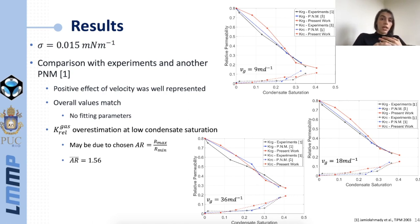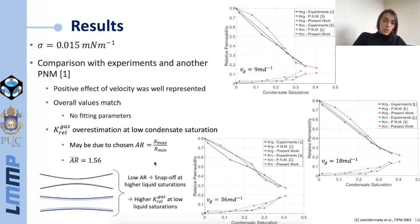For instance, for this other pore network model this average was above three. What happens when you have low aspect ratios is that you snap off at higher liquid saturations. So with low liquid saturations we don't tend to have those condensate bridges blocking the flow, which leads to higher relative permeability values.